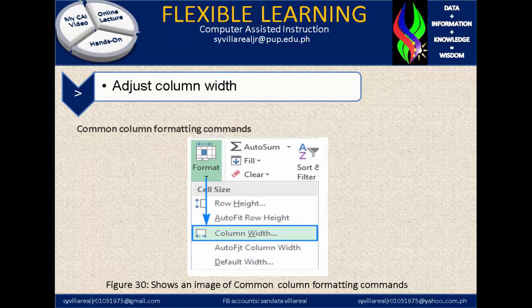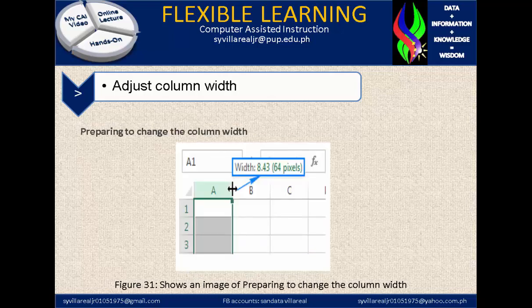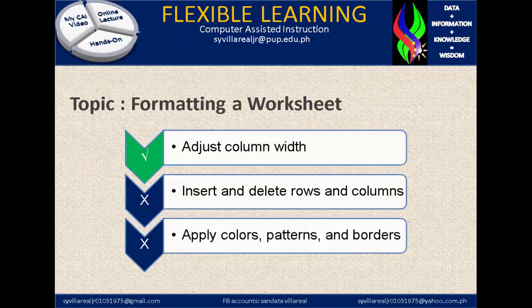If you click Format, you can go to Column Width, then apply the size of the column width you need. In Figure 31, it shows an image of preparing to change the column width using a mouse by pointing adjacent to columns A and B.